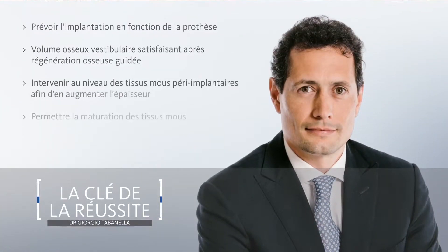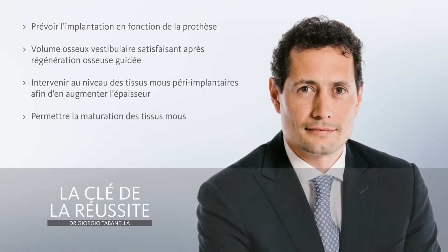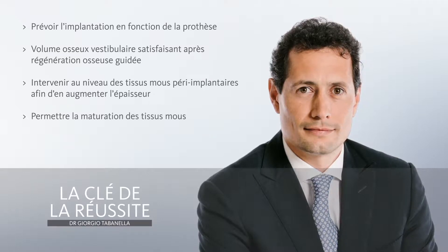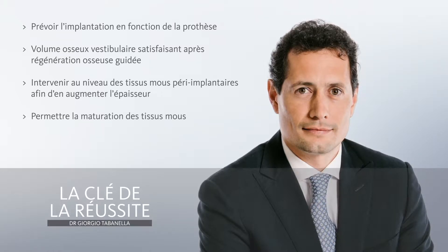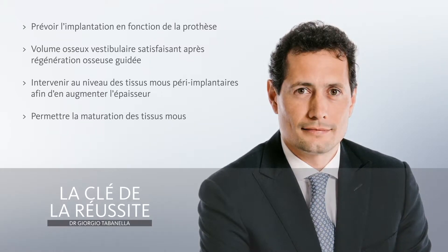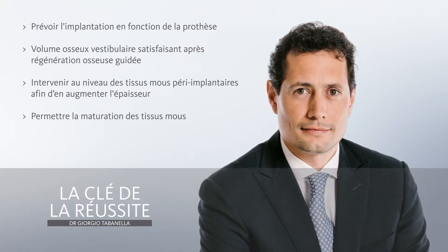So which are the key points here? First of all, we need to insert the implant in the prosthetic-driven direction. Then, of course, we need to have a good thickness of the buccal bone balcony. And then, of course, we need to properly manage the soft tissue, which will create a perfect sealing around the neck of our implant.